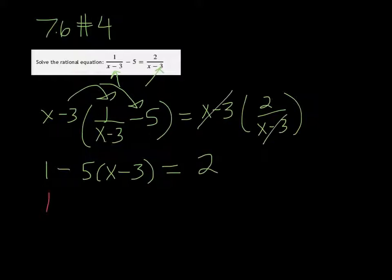So now you have just a regular linear equation. You can go ahead and solve that. Distribute the minus 5 through. Combine the 1 and 15, so you have 16 minus 5x equals 2.